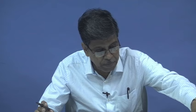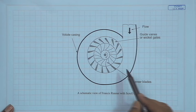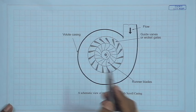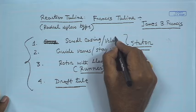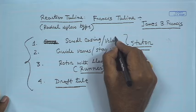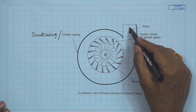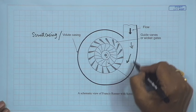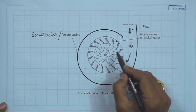Looking at a simple diagram of the Francis turbine: this is the spiral casing, also known as the scroll casing or volute casing. Water enters at high pressure here and flows in this direction. This spiral casing provides a flow area that reduces in the direction of flow through the scroll casing. As the flow rate decreases because water is entering the guide vane passages, the area is reduced accordingly to maintain uniform velocity along the flow direction.